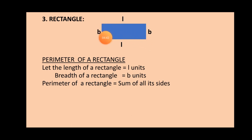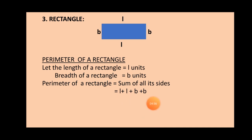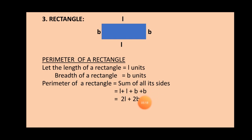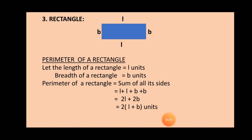To find the perimeter of a rectangle, we take the sum of all four sides. Adding l with its opposite l gives 2l, and adding b with its opposite b gives 2b. Since 2 is common in both terms, we take it out as a common factor and write the rest inside brackets: perimeter of a rectangle equals 2 multiplied by (l + b) units.